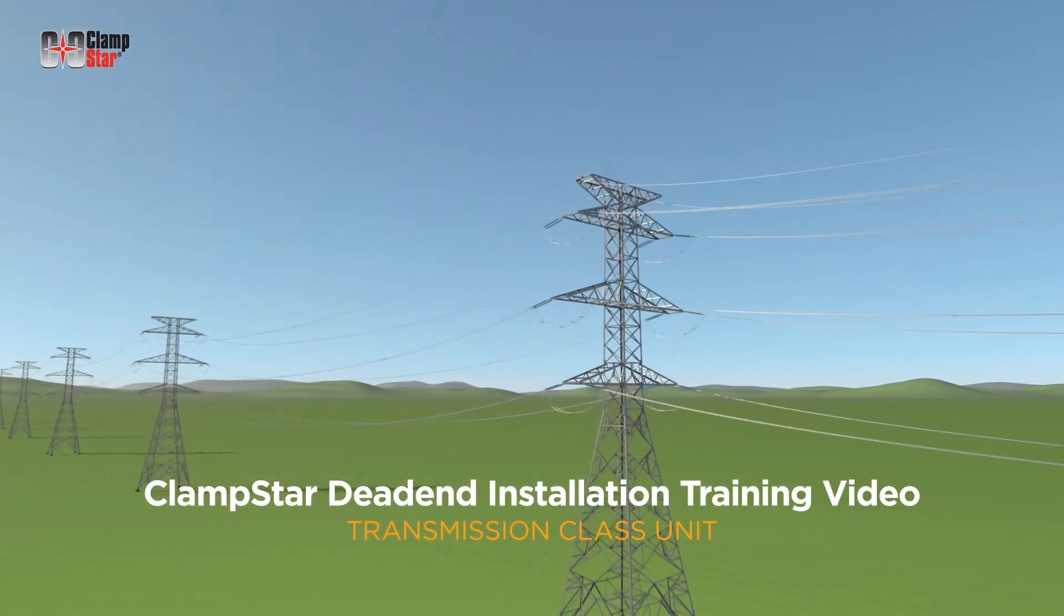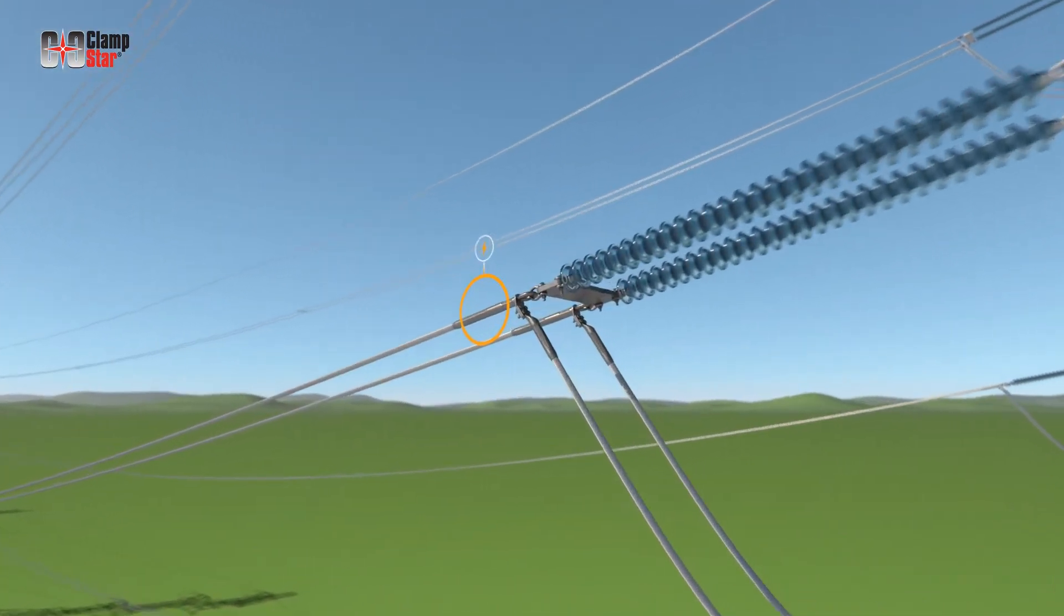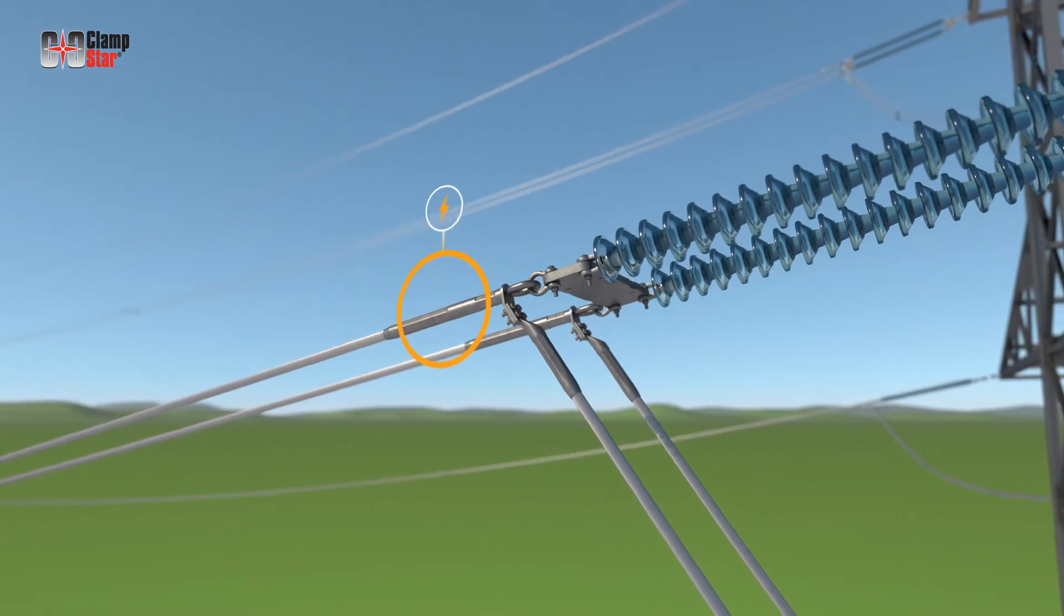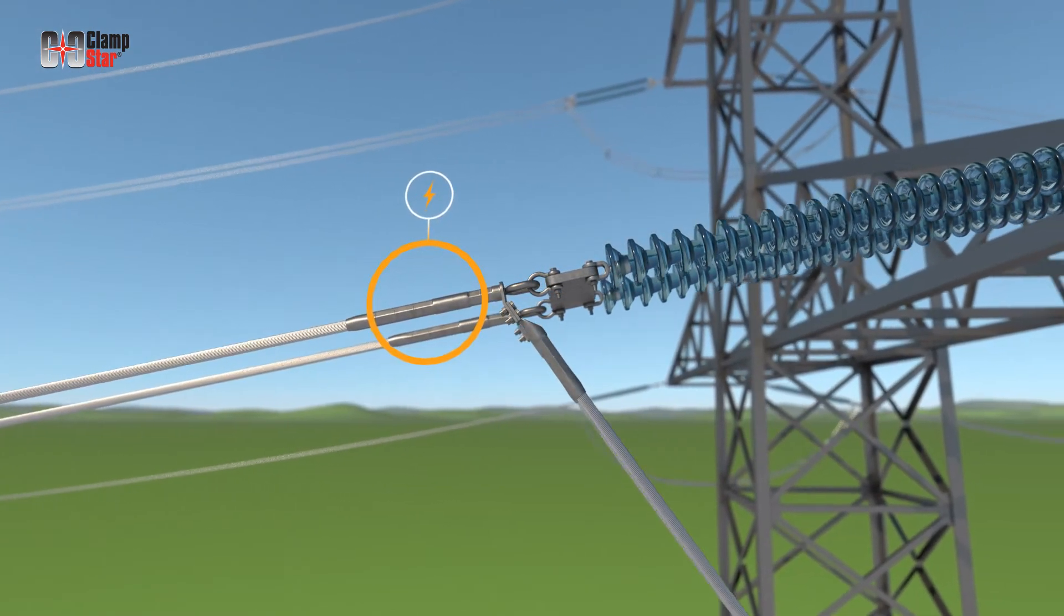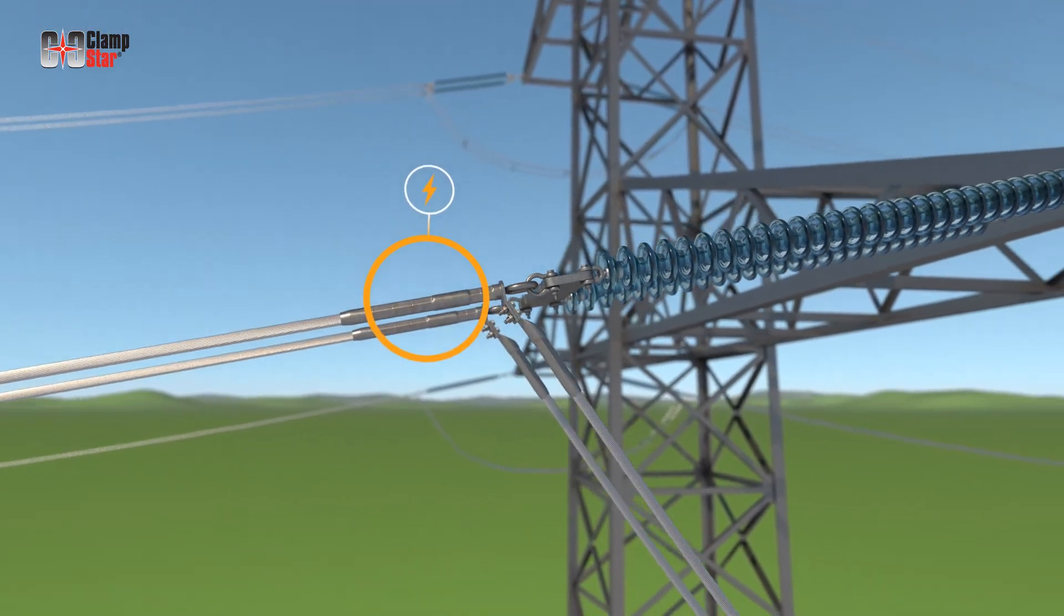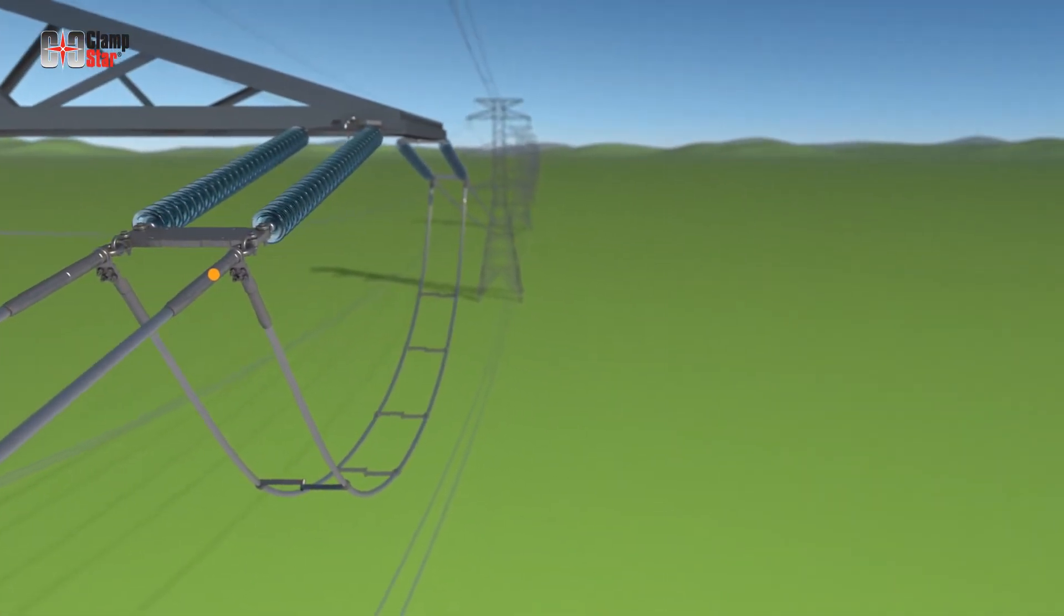ClampStar dead-end installation training video, transmission class unit. For dead-end connections, ClampStars will provide full-tension restoration and 250 degrees C system operating, allowing aged portions of infrastructure to be safely operated at temperatures well beyond their original design parameters.